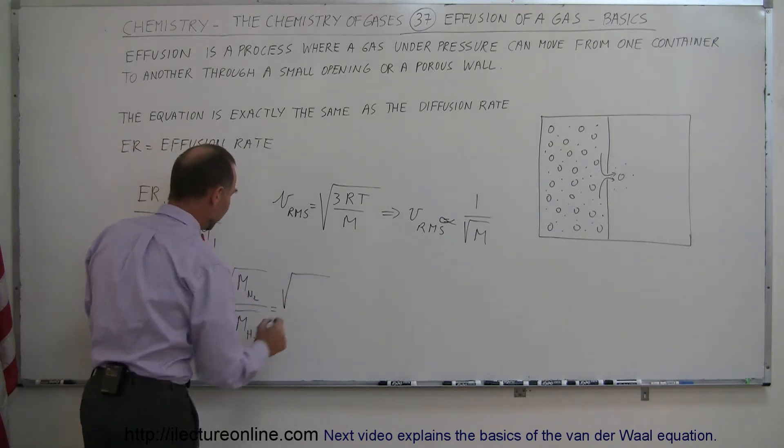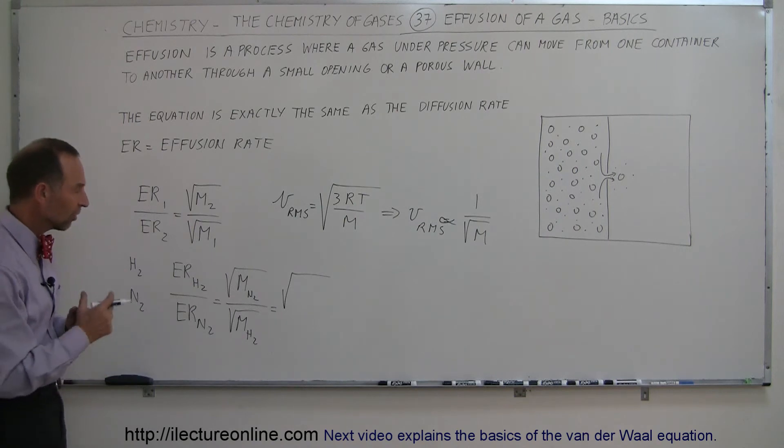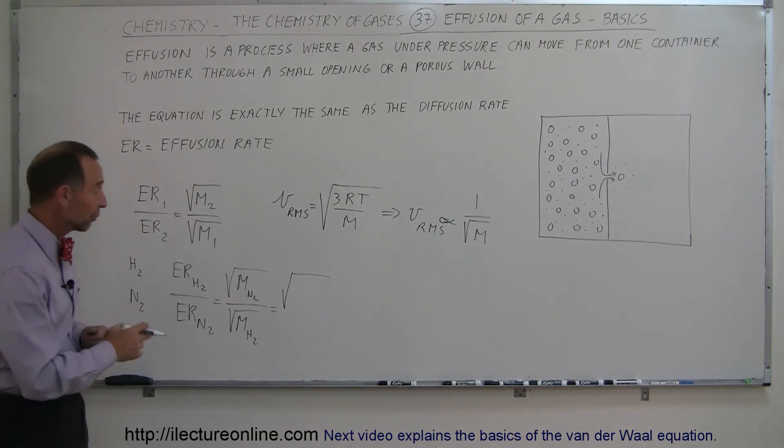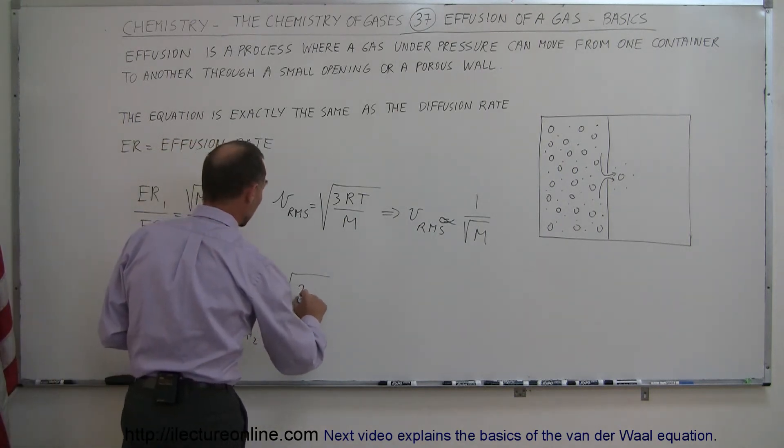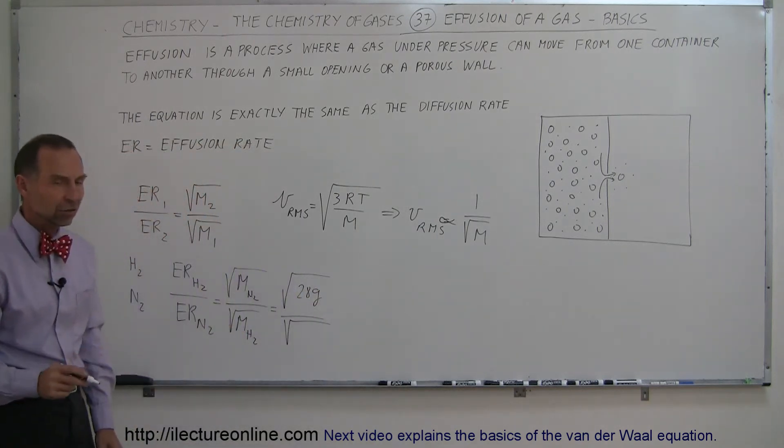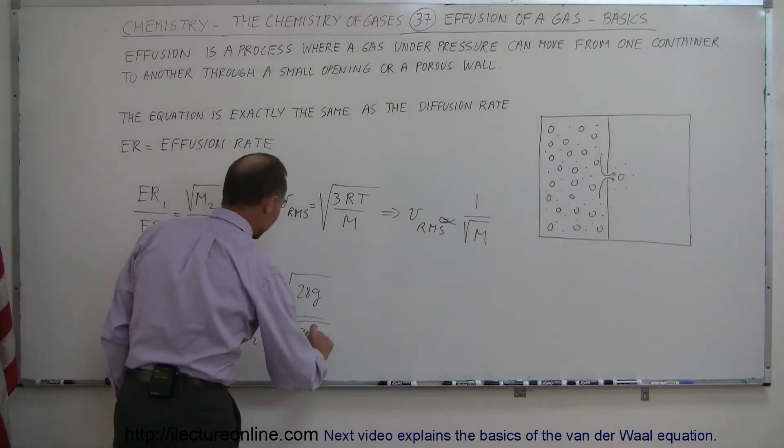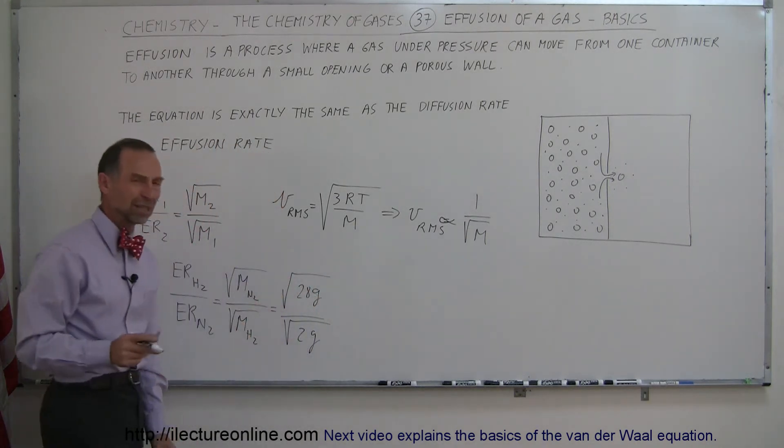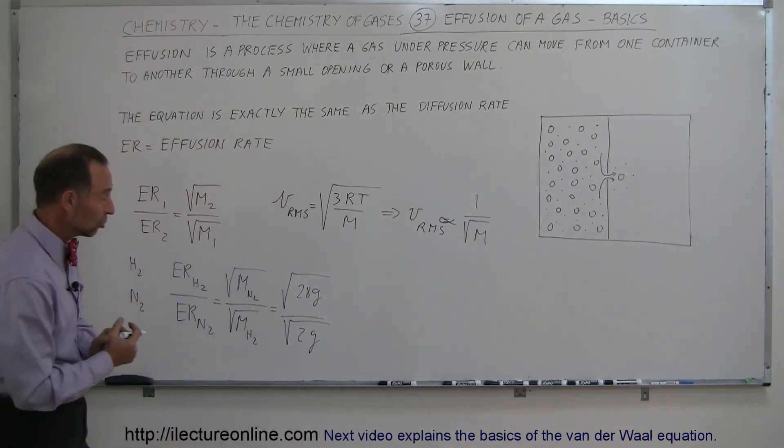So this is equal to the square root of the molar mass of nitrogen, since the diatomic molecule would be twice 14 grams, that would be 28 grams, divided by the square root of the molar mass of the hydrogen, which would be 2 grams. The reason why we don't have to convert to kilograms is because we're just simply taking the ratio.